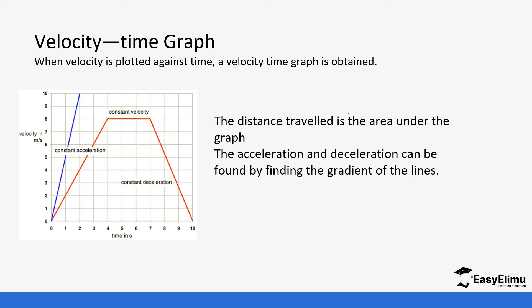The distance traveled is the area under the graph. In this case you can see it forms a trapezium, so you can calculate the area of the distance under the line. The acceleration and deceleration can be found by calculating the gradient of the line.